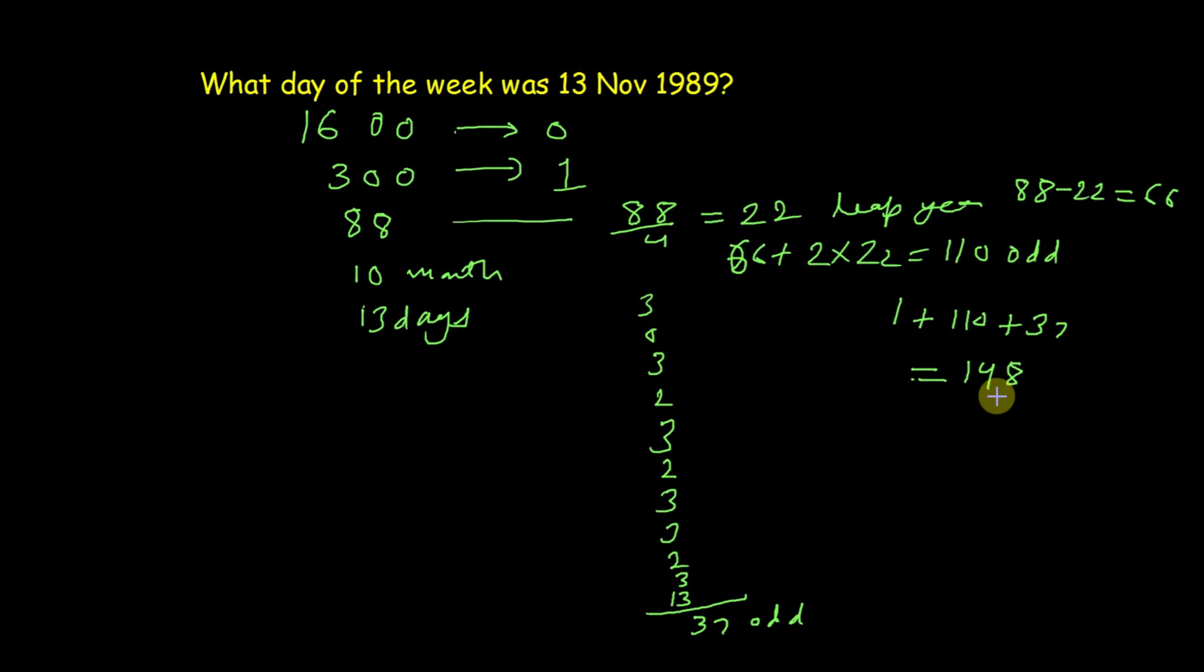But odd days can only be between 0 to 6, so we divide this number by 7 and remainder is 1. And as I told you earlier, one means Monday, so 13 November 1989 was Monday.